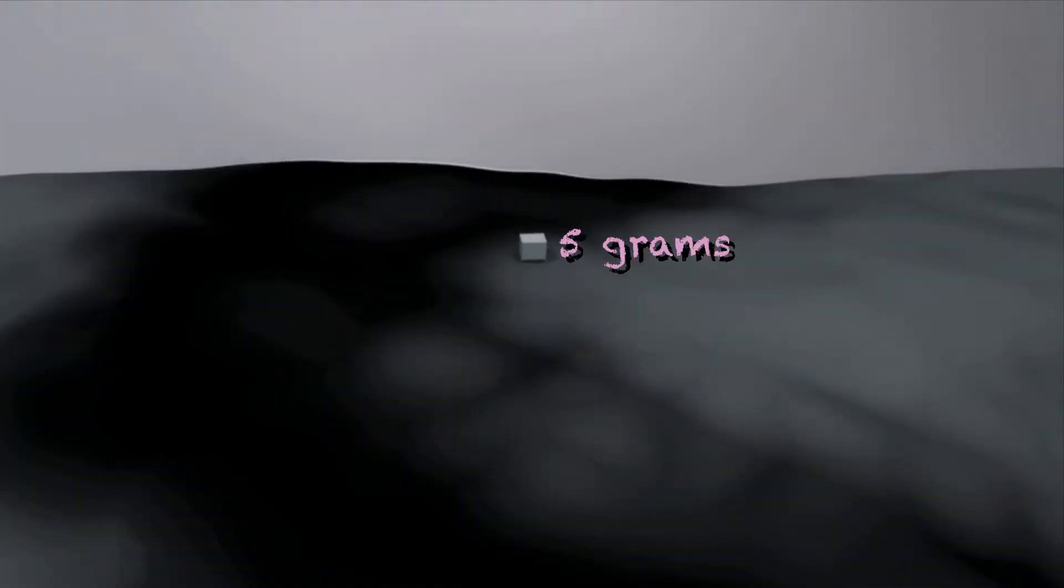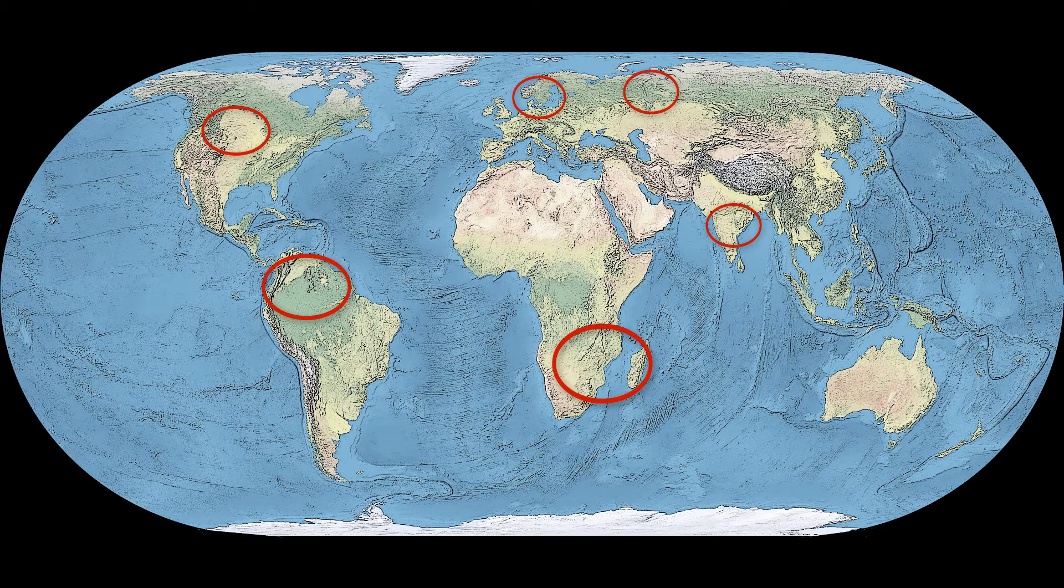Beryllium is quite uncommon. One ton of dirt contains only a few grams of beryllium. But in some places, it is concentrated as a mineral, such as beryl.